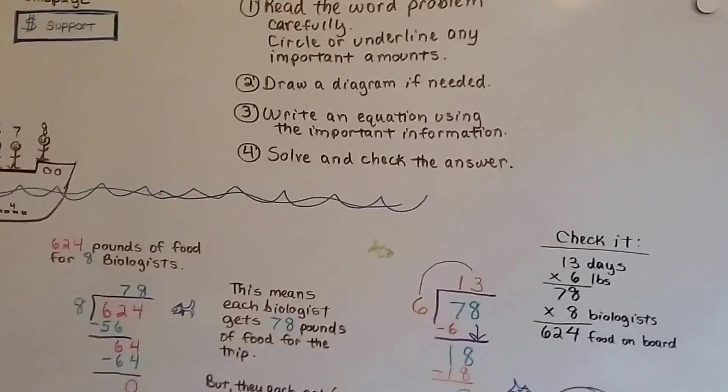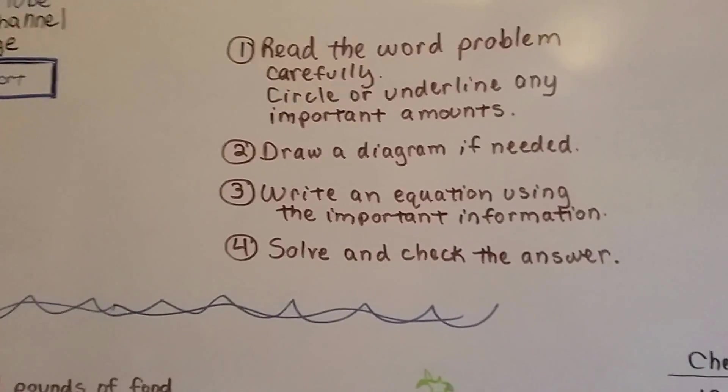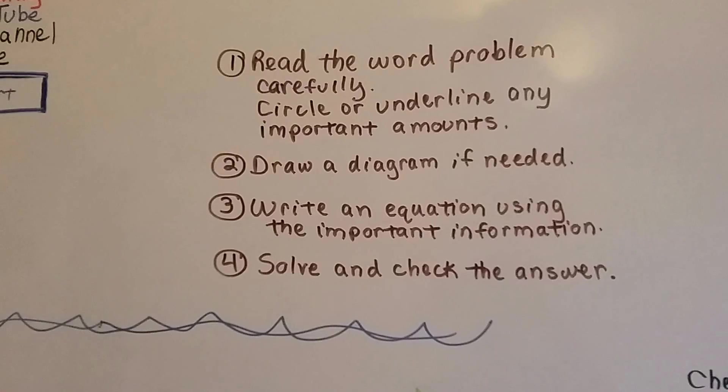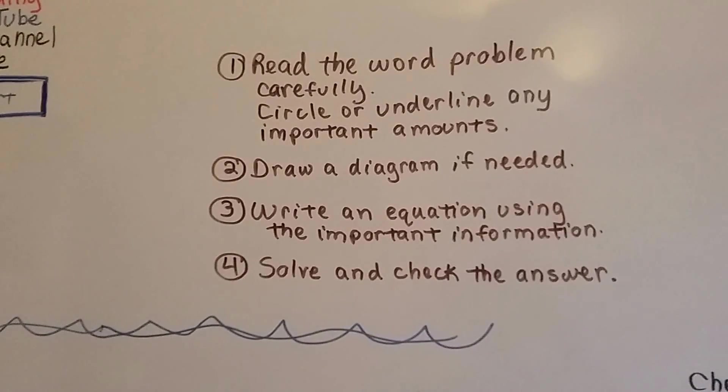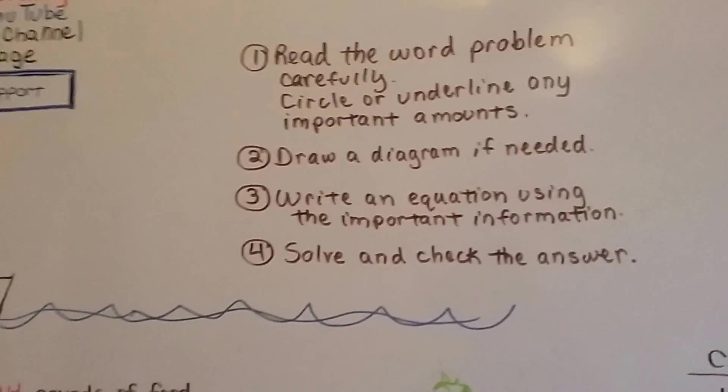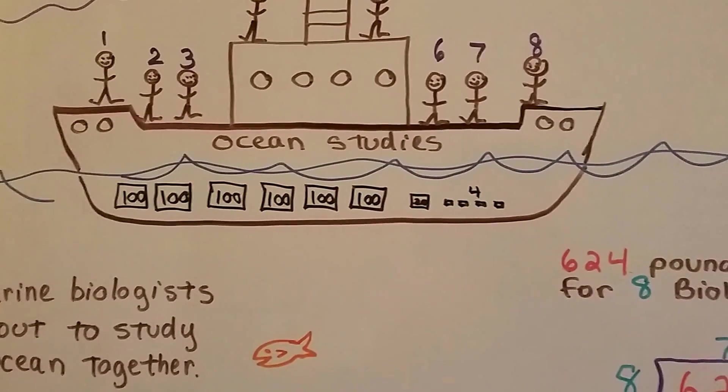So, you want to read the word problem carefully. You want to circle or underline or highlight any important amounts. You want to draw a diagram if you need to. You want to write an equation that uses the important information and then solve and check the answer. And it's really important to check the answer because you don't want to do all this work and then find out you got it wrong.